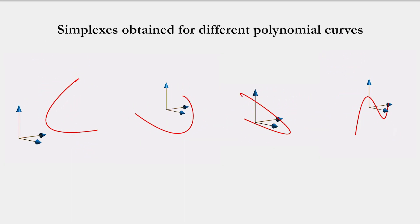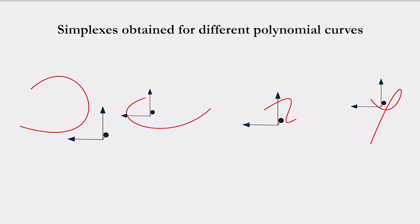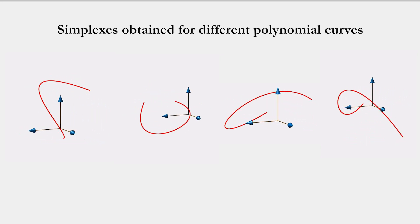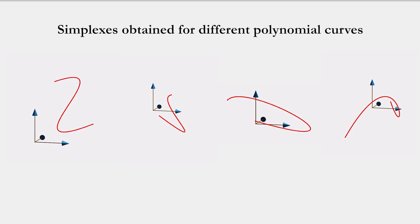We can apply the Minvo basis to any polynomial curve, like the one shown in red. The enclosing simplexes obtained by the Minvo basis are these ones.